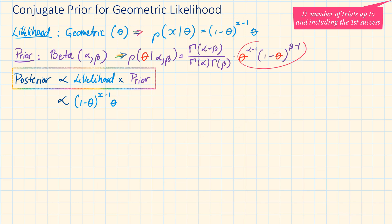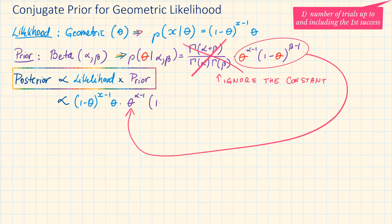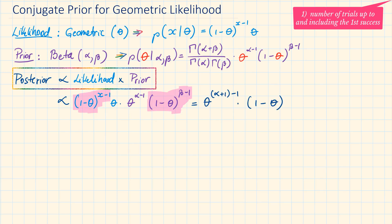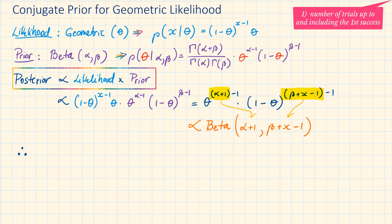Because we are only looking at the proportionality, we can ignore the constants. Simplifying, we have θ^(α+1−1) · (1−θ)^(β+x−1−1), which is proportional to a beta distribution with parameters α+1 and β+x−1.